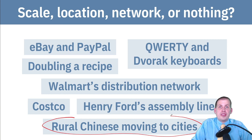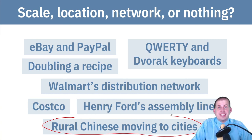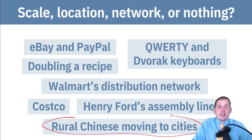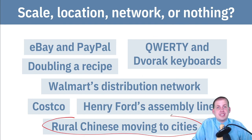That's how you can see economies of scale, economies of agglomeration, and network effects in the real world. One fun thing now that you know about this is to just pay attention to things you see — try to see if they're economies of scale or agglomeration. If you see a whole bunch of gas stations clustered together, there's probably a reason, and it's an agglomeration story. Pay attention to these things in the world and you'll start seeing them all over the place.